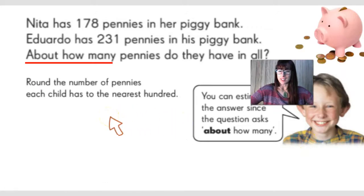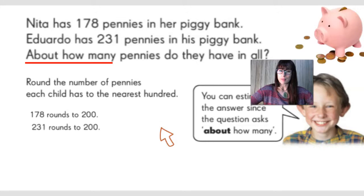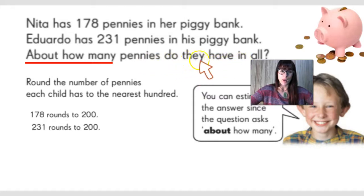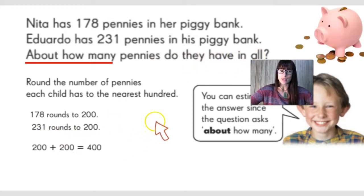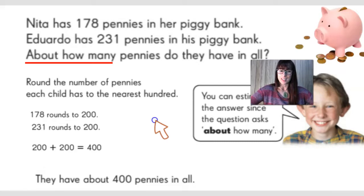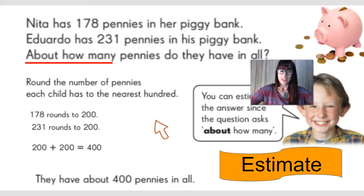To do that, we will round the number of pennies each child has to the nearest hundred. So 178 rounds to 200 and 231 rounds to 200. By looking at the problem, I can tell that this is a problem of addition because they're asking me to find out how many do they have in all. So we're going to add 200 plus 200 equals 400. My answer is they have about 400 pennies in all. This was a case of estimation — all we needed to do was get the estimated amount.